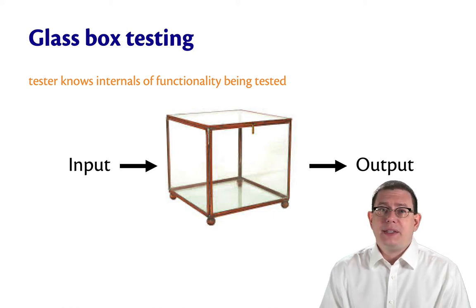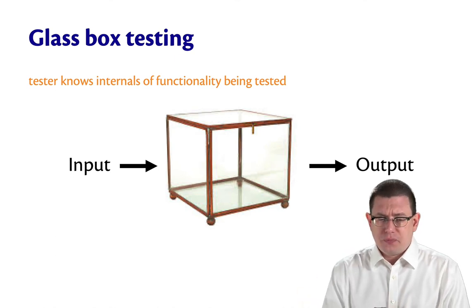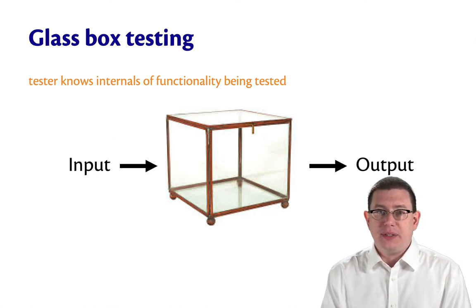One way to make that distinction might be: with black box, you don't get access to the source code as the tester. With glass box, you do. So with glass box testing, the tester does actually know how the input is transformed into the output.